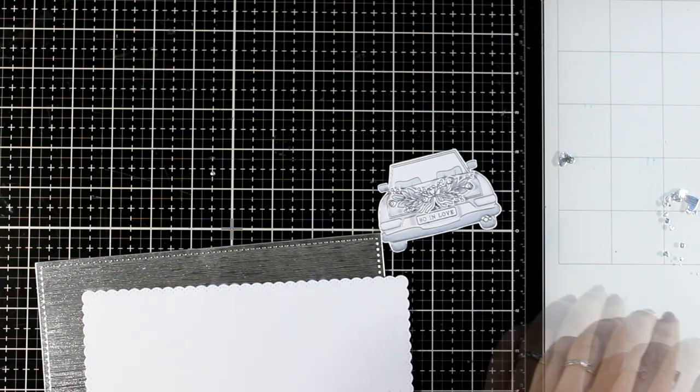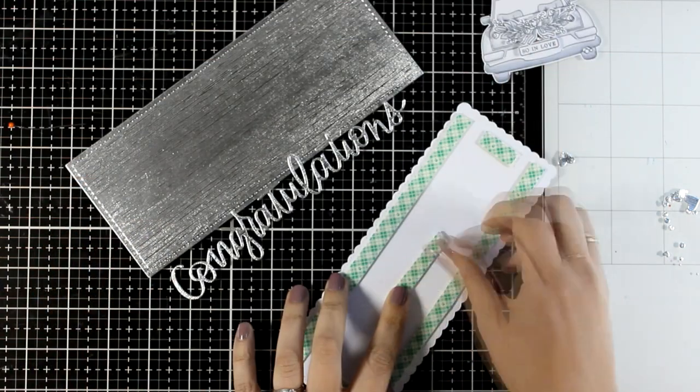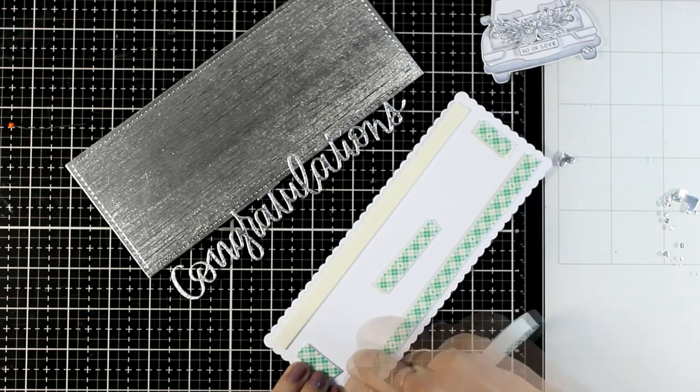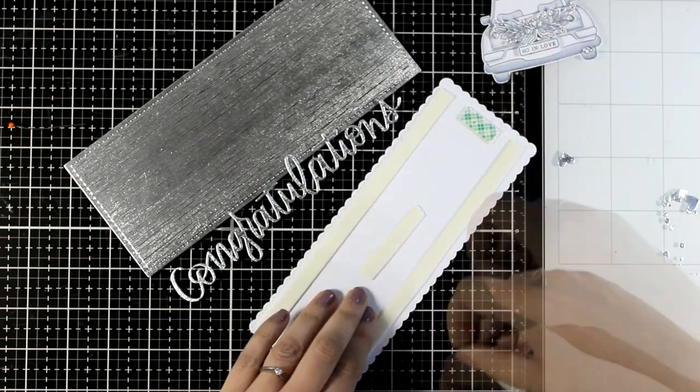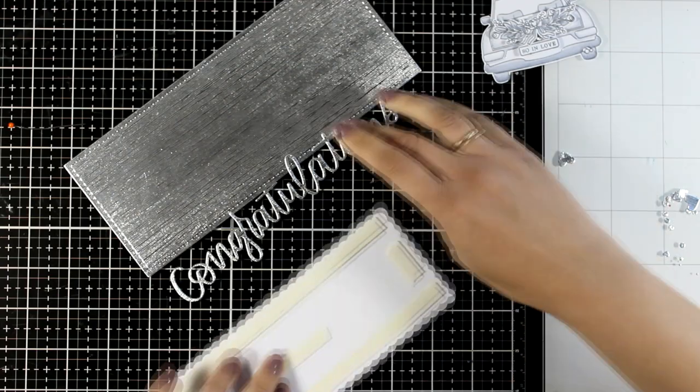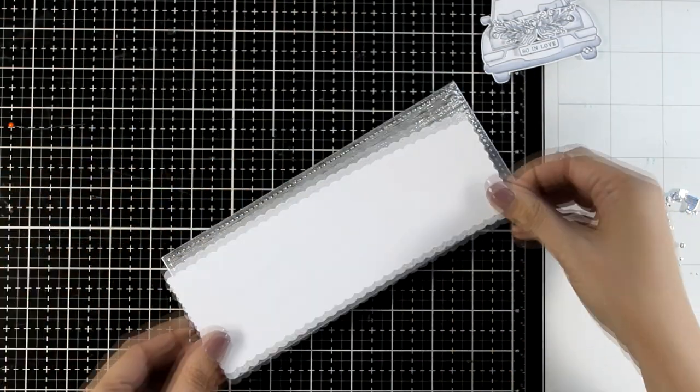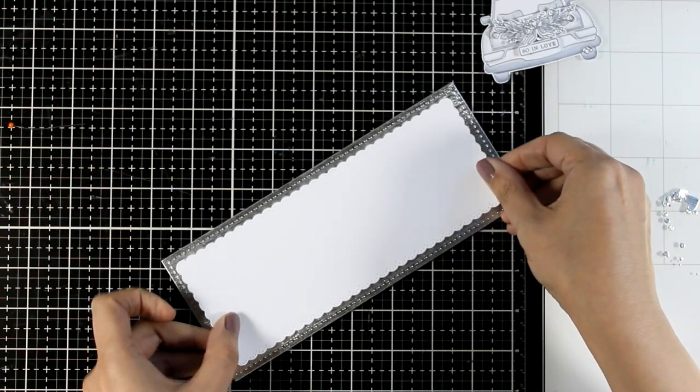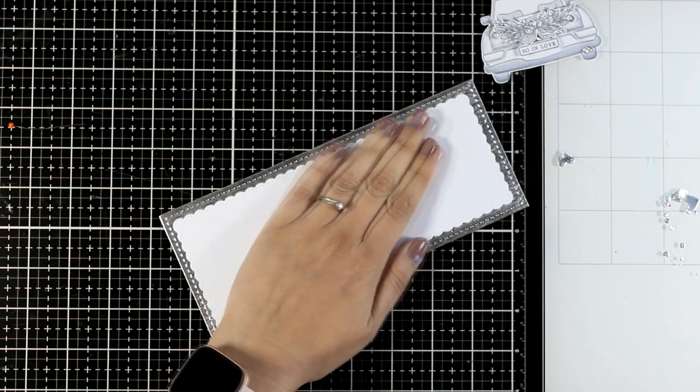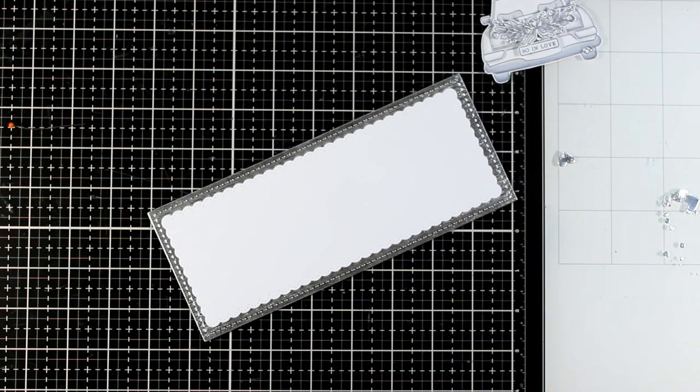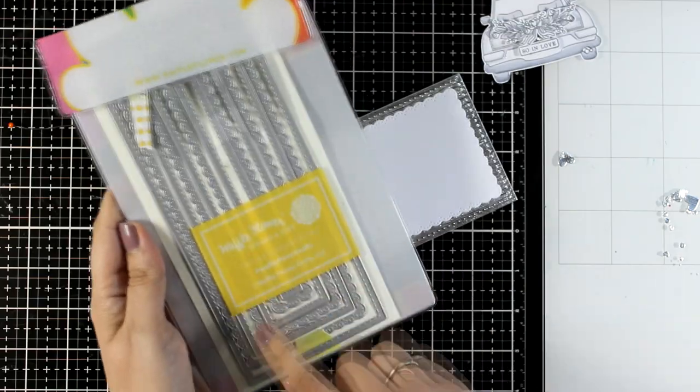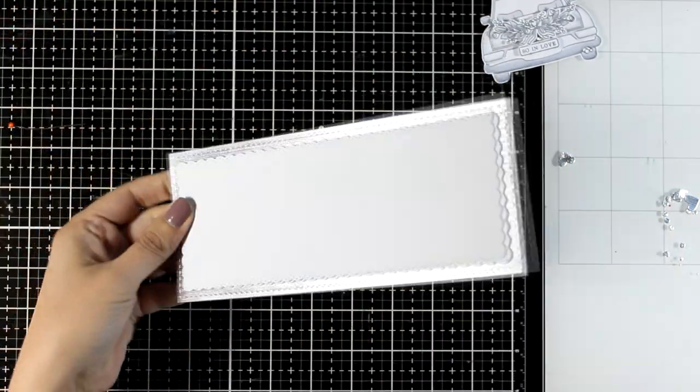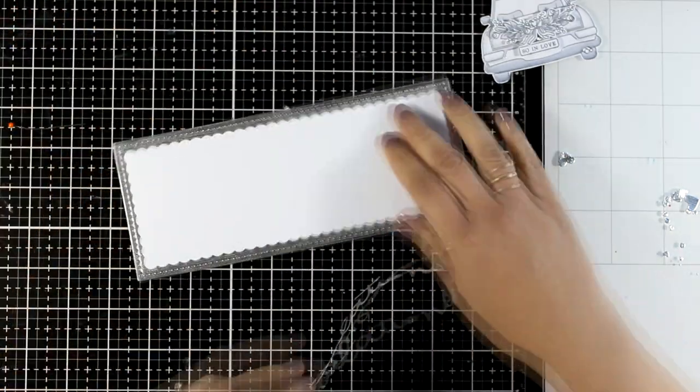Now let's work on the background layers. I do have a 3.5 by 8.5 layer which is the basic slimline card size. This I did cut it out from silver cardstock and then on top I am sticking this white panel. Both these ones were cut out by using this waffle flower die set. It is perfect for slimline cards to create lovely layers with detail all around.